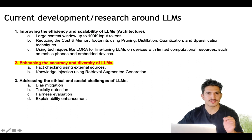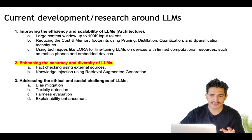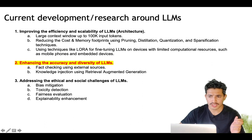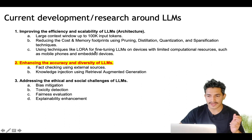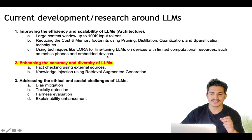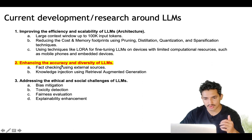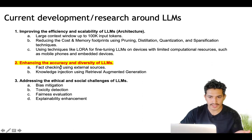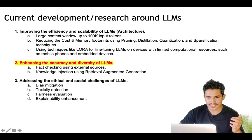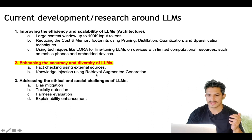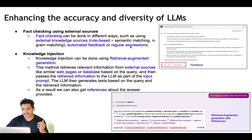We have completed the first part where we looked at methodologies, tips, tricks, and techniques to make the LLM architecture more scalable and efficient — larger context windows up to 100k tokens, pruning, distillation, quantization, sparsification, and LoRA-based fine-tuning which helps devices with limited computation such as mobile phones and embedded devices. Next, we will look at techniques for improving the accuracy and diversity of LLMs — the two techniques are fact checking using external sources and knowledge injection using retrieval augmented generation.